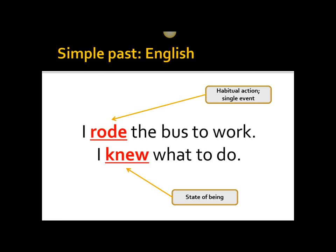What is the simple past? The simple past is a one-verb construction that talks about events in the past that either happened habitually — for instance, I rode the bus to work every day — or a single event: I rode the bus to work, and that was it. I never went to work again. Or I could also describe a state of being: I knew what to do. The main idea is that it's a one-verb construction — rode or knew — not 'I have ridden the bus' or 'I have known what to do,' both of which require a helping verb.